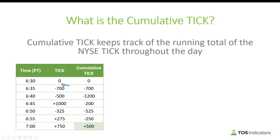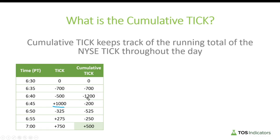Let's assume five minutes have passed — 6:35 rolls around and the tick value is negative 700. It takes zero plus negative 700 to give you a cumulative tick value of negative 700. At 6:40, the tick value is negative 500. It takes negative 700, adds negative 500, and you have negative 1200. At 6:45, you have a plus 1000 tick reading: negative 1200 plus 1000 gives a cumulative tick of negative 200, compared to negative 1200 just five minutes ago.